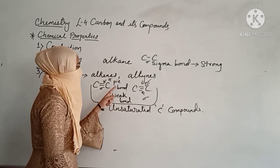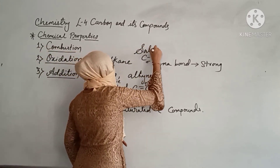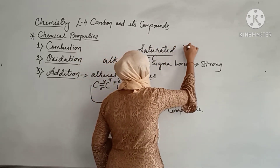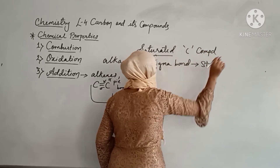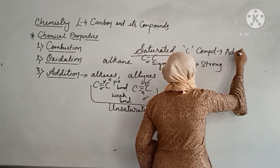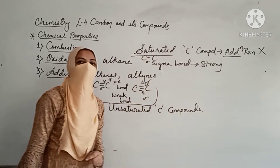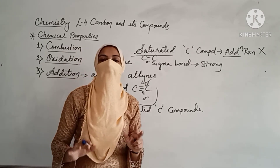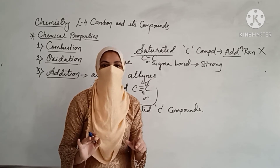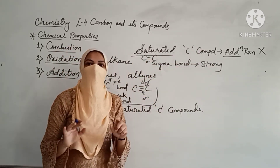Unsaturation means double bond and triple bond. Saturated carbon compounds cannot give addition reaction. The reason is they do not have any pi bond. Where a pi bond is present, you can do addition; where there is no pi bond, addition is not possible. That is why saturated carbon compounds cannot give addition reaction — when all bonds are single bonds, addition reaction is not possible.